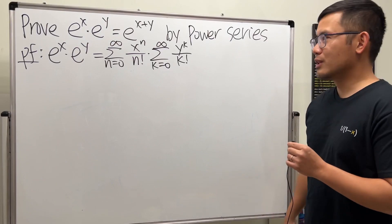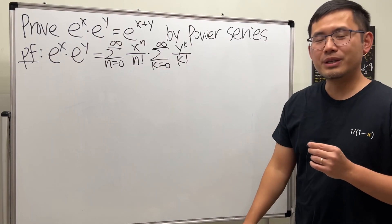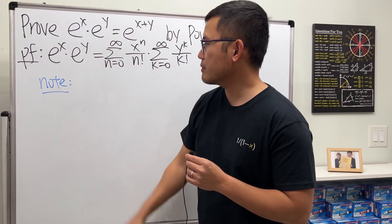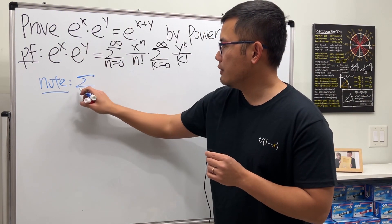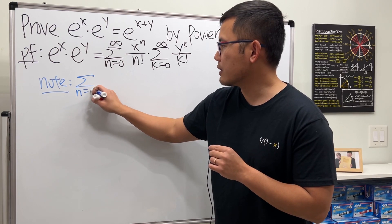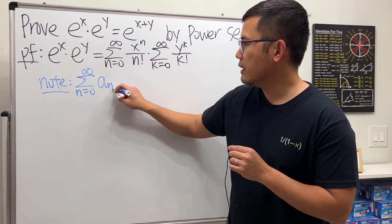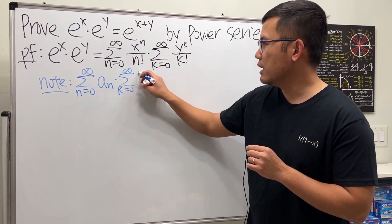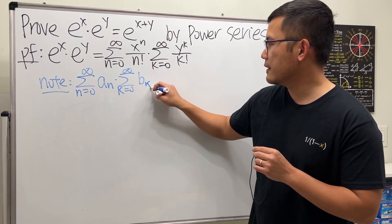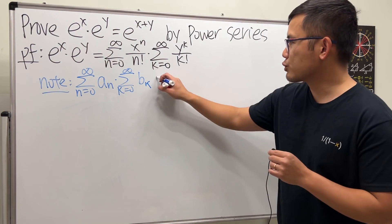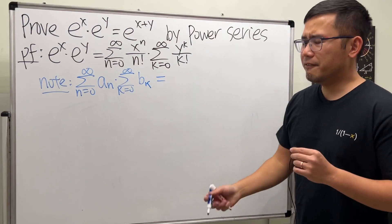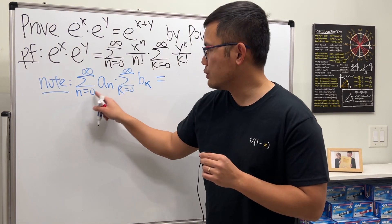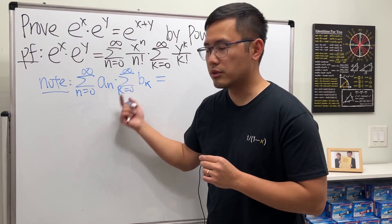How do we multiply two infinite series? We can use the Cauchy product. Suppose we have two infinite series: n goes from 0 to infinity for a_n, and k goes from 0 to infinity for b_k. Let me investigate this a little bit — this means we plug 0, 1, 2, 3, and so on into each series and add them up.